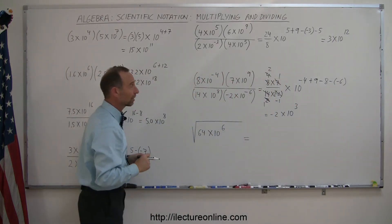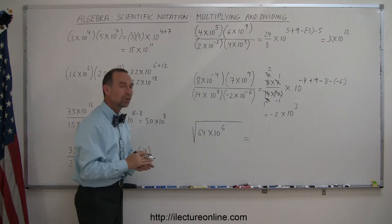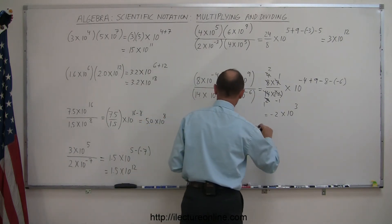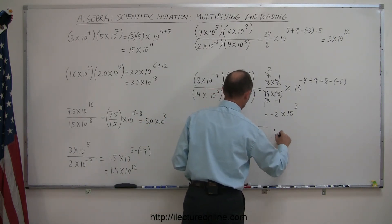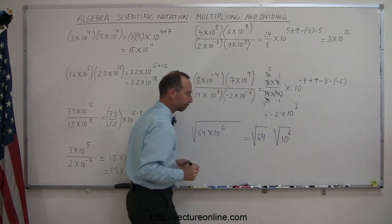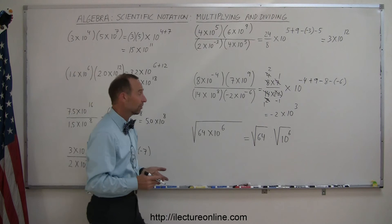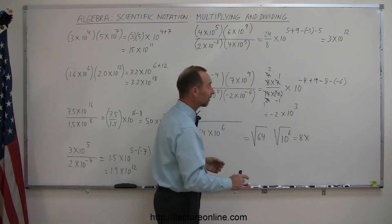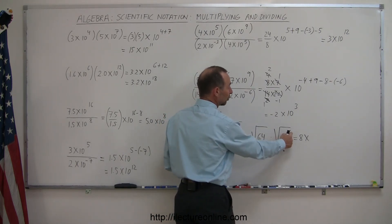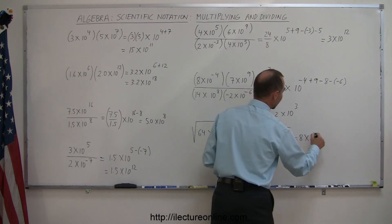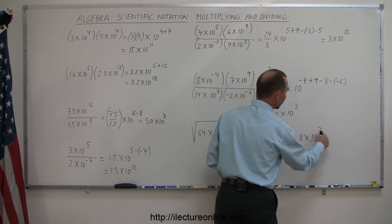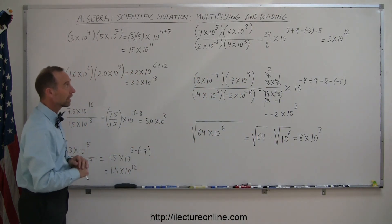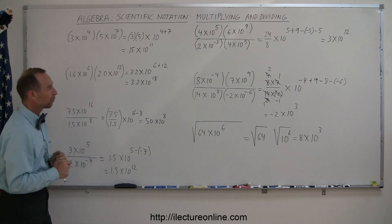For a radical example, the square root of 64 times 10 to the 6th can be split into two separate radicals: the square root of 64 times the square root of 10 to the 6th. The square root of 64 is 8. Taking the square root of 10 to the 6th means dividing the exponent by 2, giving 10 to the 3rd. So the answer is 8 times 10 to the 3rd power, since 10 to the 3rd times 10 to the 3rd gives back 10 to the 6th. That covers how to use numbers with scientific notation.